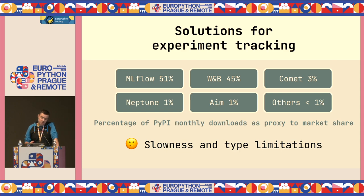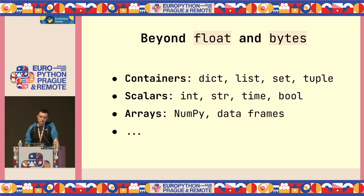The limitation of these frameworks is slowness and restrictions on what kind of information you can track. By type limitations, I mean: what if we don't want to track just floats or binary blobs? What if in our experiments we have dictionaries, lists, strings, timestamps, booleans, NumPy arrays, or DataFrames? How can we track all the richness of information we are producing through our experiments?